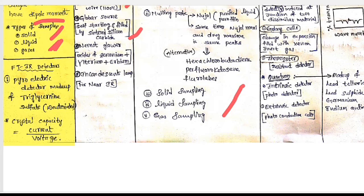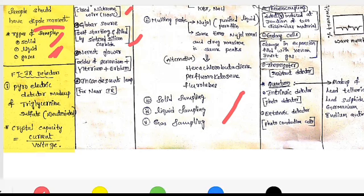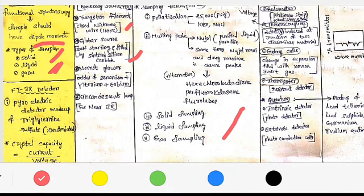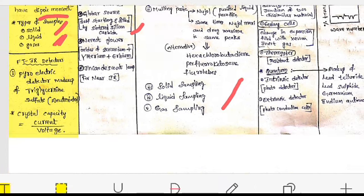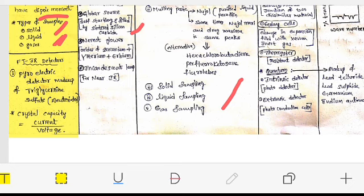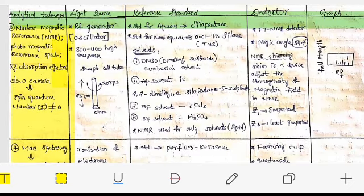In case of FTIR detectors, pyroelectric detectors are specially used in FTIR and they are made up of triglycine sulfate deuterated. The crystal capacity of the pyroelectric detectors is current divided by voltage.